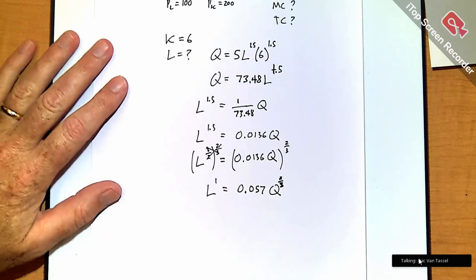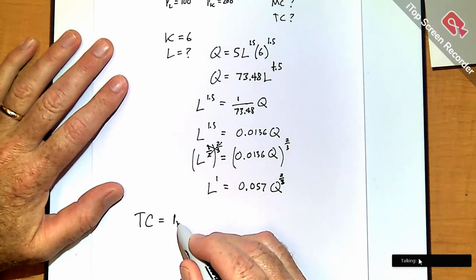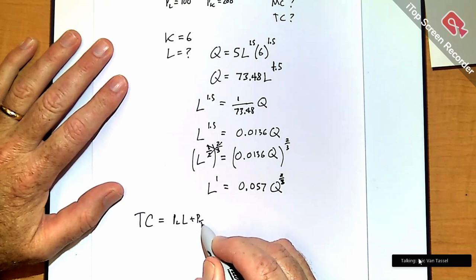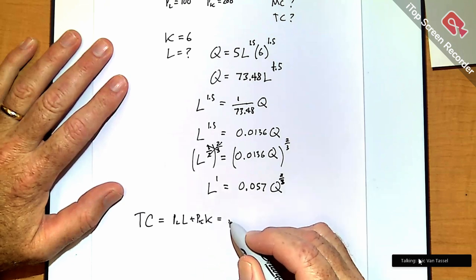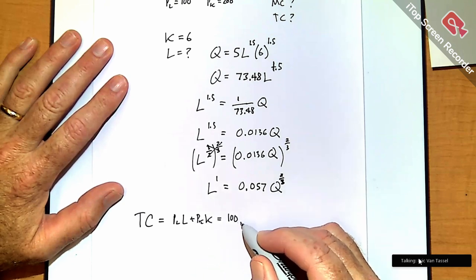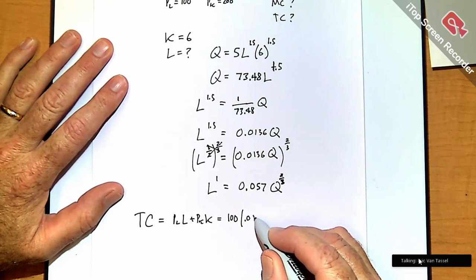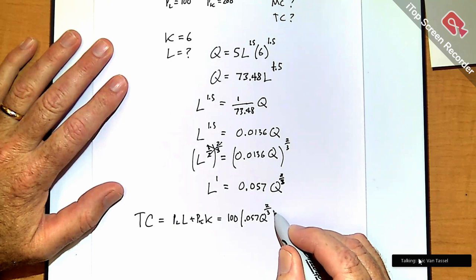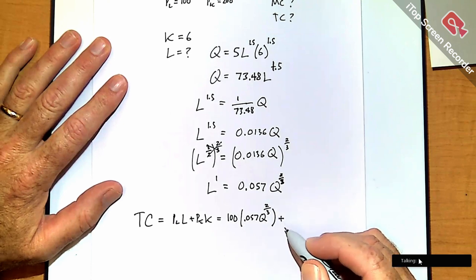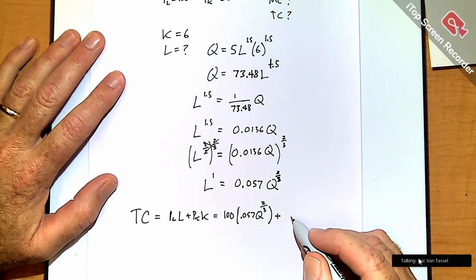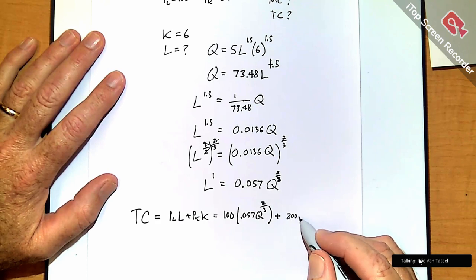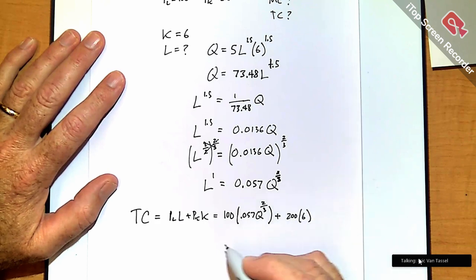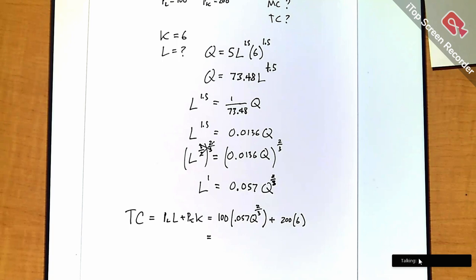So your total cost, PL times L plus PK times K. PL is 100, and L is 0.057 Q to the power 2/3. And PK is 200, and how many units of those? We got 6 of those. All right, so that's my total cost function.